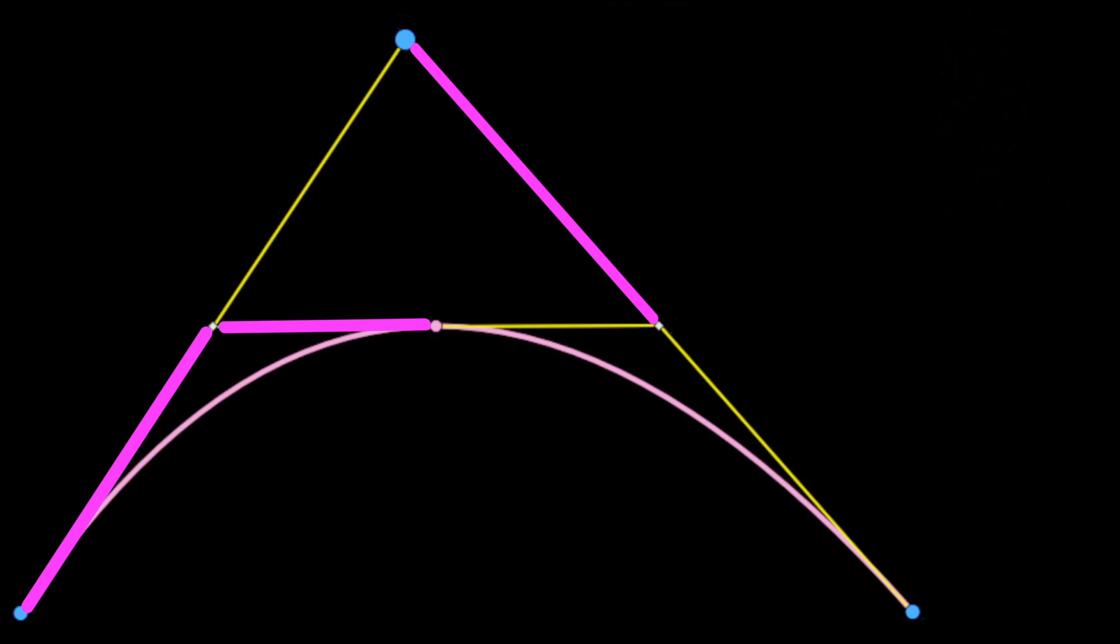Now to turn this into formulas, let's start by labeling our points. So let's call the control points A, B, and C. This point here on AB, I'll call point Q. This point here on BC, I'll call point R. And we'll call the touching point that we're after point P.